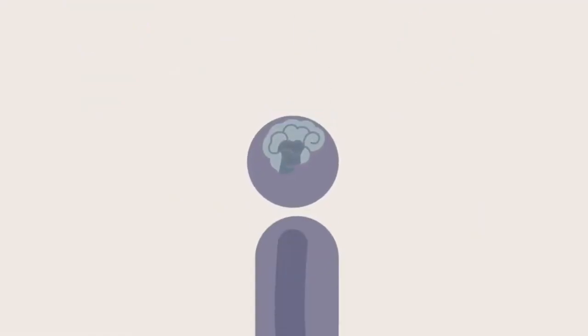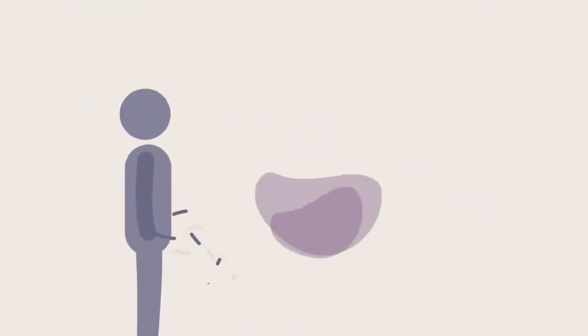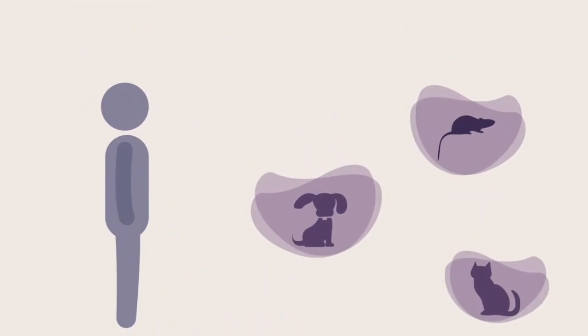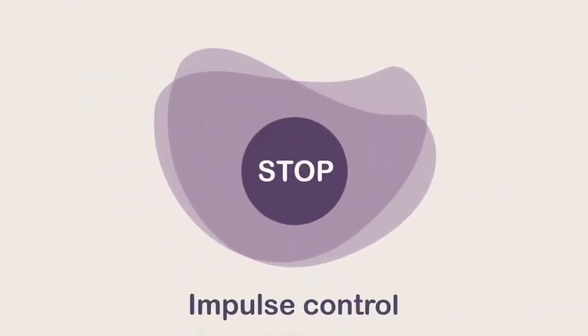Addiction also affects the prefrontal cortex, which is what separates us from other animals. This is where decision-making and impulse control live.